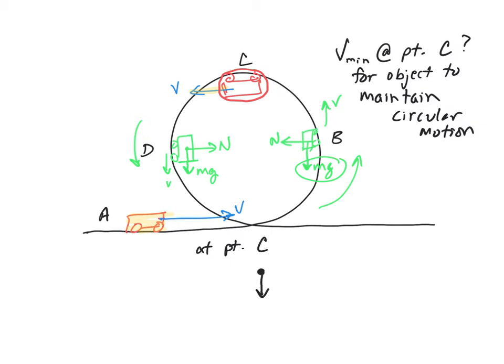I've got mg pointed downwards because it always points down. But I also have the normal force pointed down at that instant as well. I don't know which is longer than the other, so I'm just drawing them random lengths.